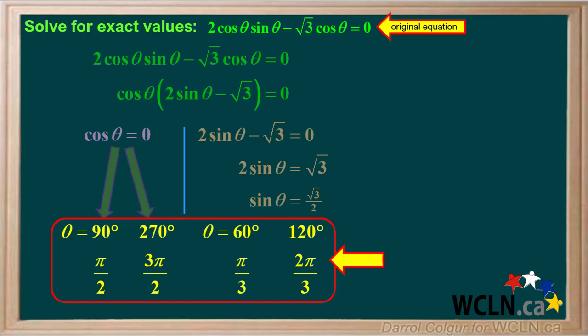These four angles for angle theta will solve this equation exactly. A good way to check your answer would be to insert each of these four angles in for theta on the left side of the original equation and see if you get 0 for an answer.